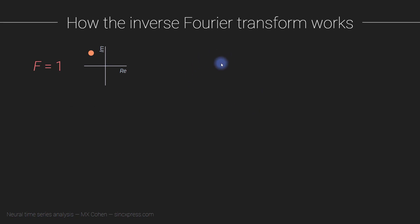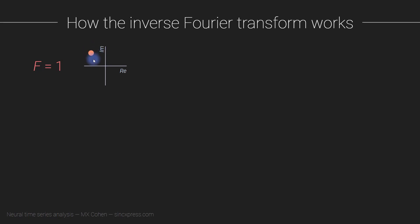Here's how the inverse Fourier transform works. In the inverse Fourier transform we start off with the Fourier coefficients — we already have all of the complex-valued Fourier coefficients and we want to reconstruct a signal in the time domain. You start off with one Fourier coefficient, represented by some coordinates on the complex plane, for one particular frequency, say frequency equals one.